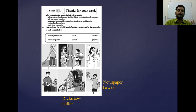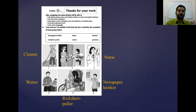Then the word is nurse — who is a nurse? This is a nurse. And below the nurse, what is the next word? Waiter. So who is a waiter? He is a waiter. Then our word is cleaner — so who is a cleaner? A cleaner is standing here with a broom. And last of all, we have a postman. Here is the postman — the postman is giving a letter.